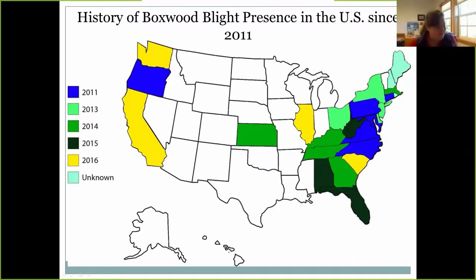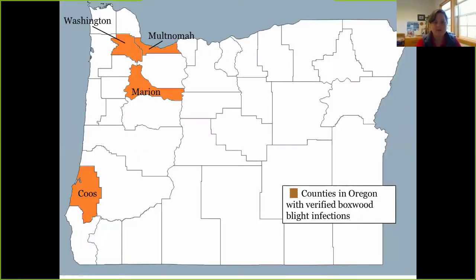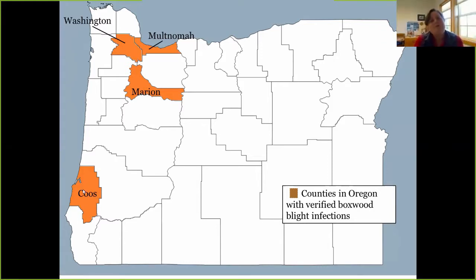Cassie Boske introduces herself as an Extension agent in Coos and Curry counties on the southwestern coast of Oregon covering all agriculture-related topics. Boxwood blight is currently present in four counties in Oregon: Washington, Multnomah, and Marion counties in the Portland and Salem area, plus an isolated instance in Coos County. The purpose of this section is not to create alarm but to give diagnosticians another tool when people ask about plant problems.